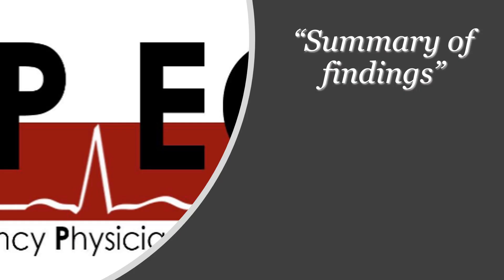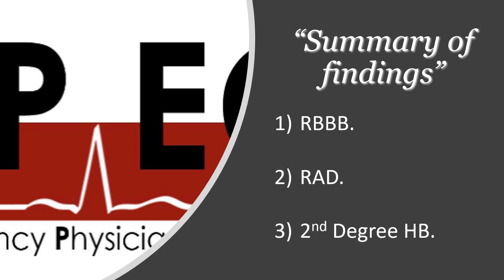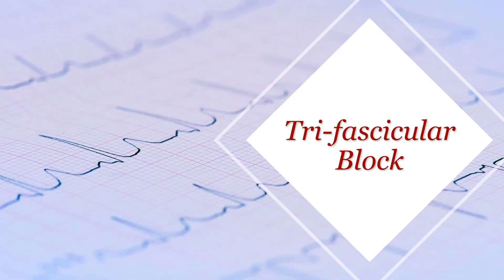In summary so far, the findings in our ECG are: right bundle branch block, right axis deviation, and a second degree heart block. If you combine the three together, that gives you the diagnosis — which is trifascicular block.